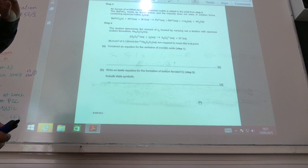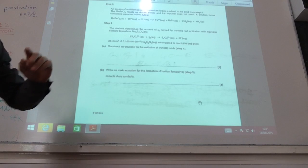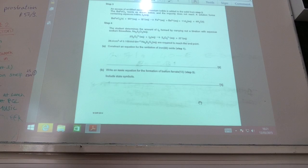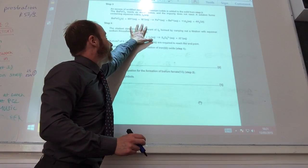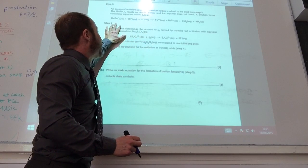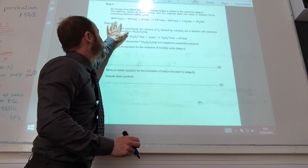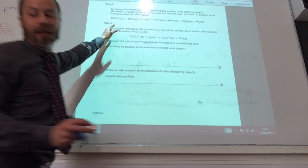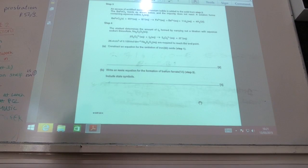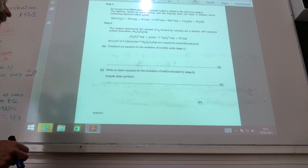Well, the reducing agent is actually going to be iodide ions. And why iodide ions? It's because they have donated electrons to the barium ferrite. So iodide ions, because they've lost electrons to FeO4^2-.